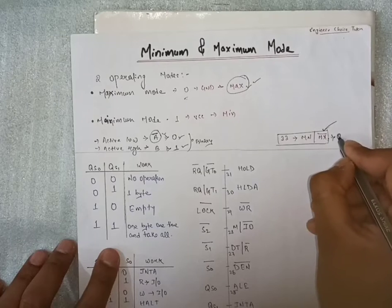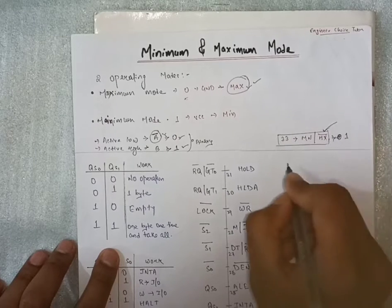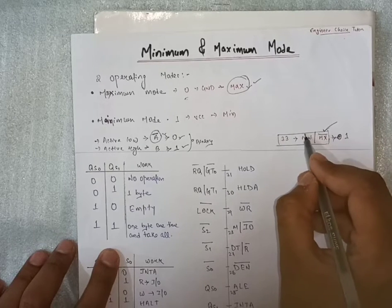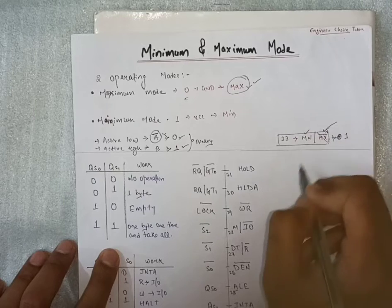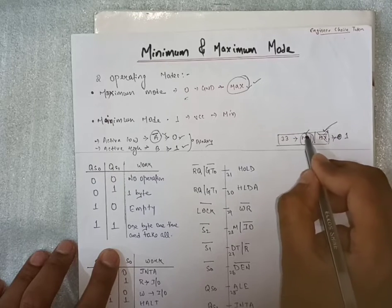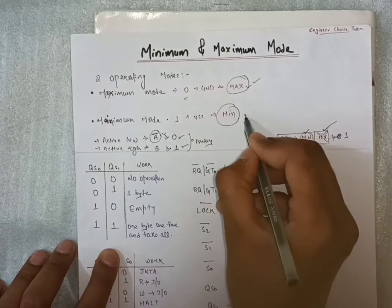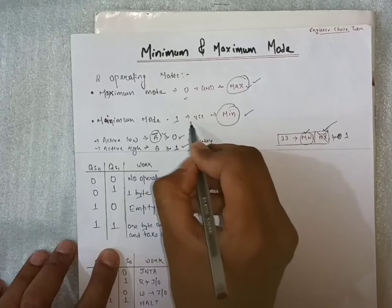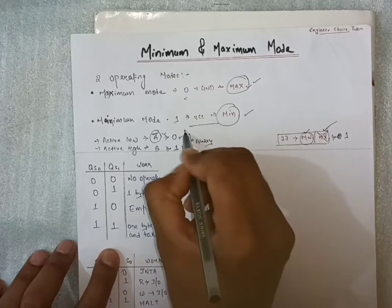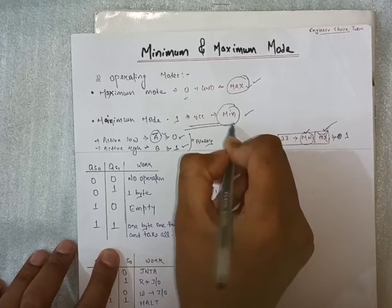If this value is one, one means only simple will work, no bar will be involved. Then this first value is minimum. So we can see it is minimum. One value is there, it is connected to VCC and it works in minimum mode.